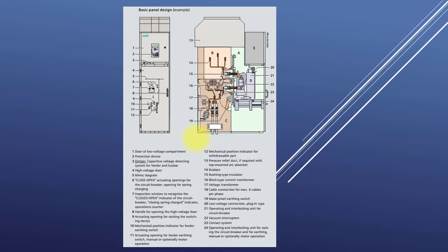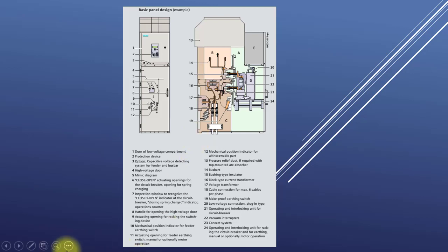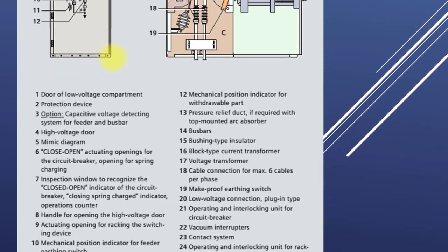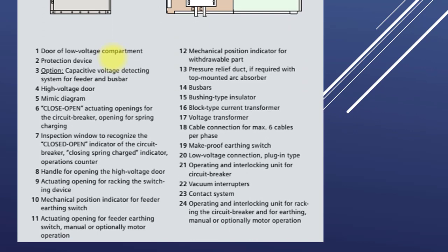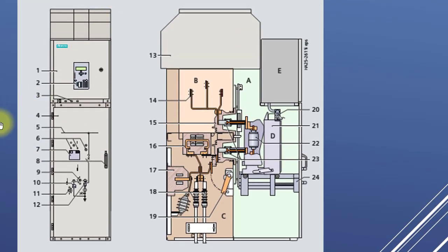This is another example of MV switchgear. Here you can see the mimic diagram on the cable compartment front door. You can also see the semaphore indication which shows the status of the breaker, the isolator or disconnector switch, and this is the arcing chamber — which we have not discussed much.